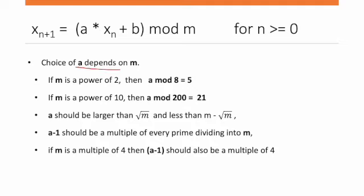Now, how do you choose a? Choosing a depends on m. If m is 2 to the power of something, then a mod 8 should equal 5. Or if m is a power of 10, then a mod 200 should equal 21.